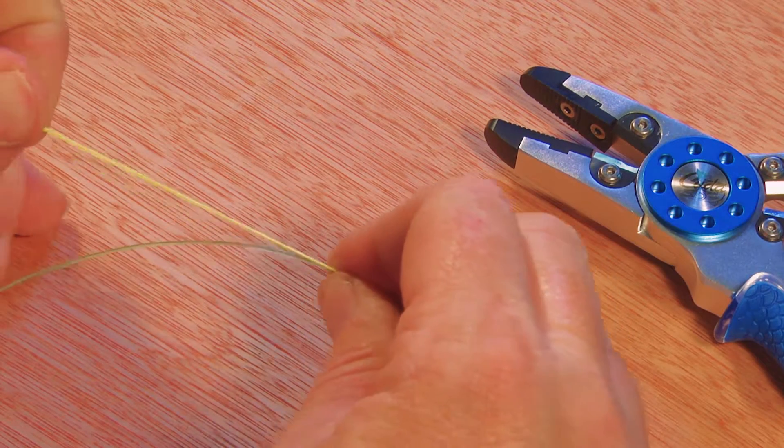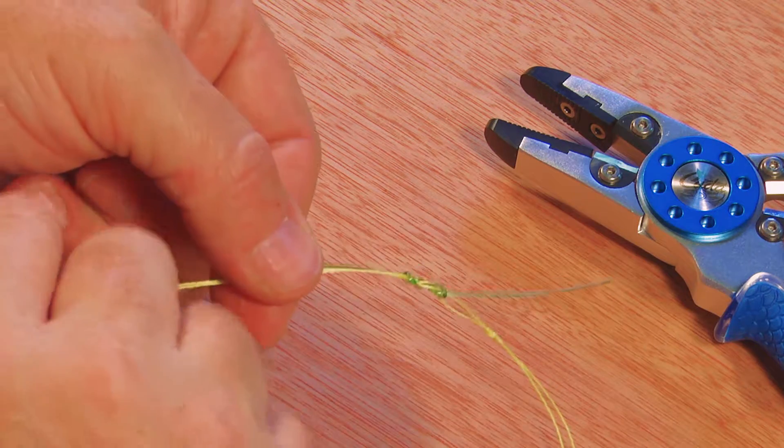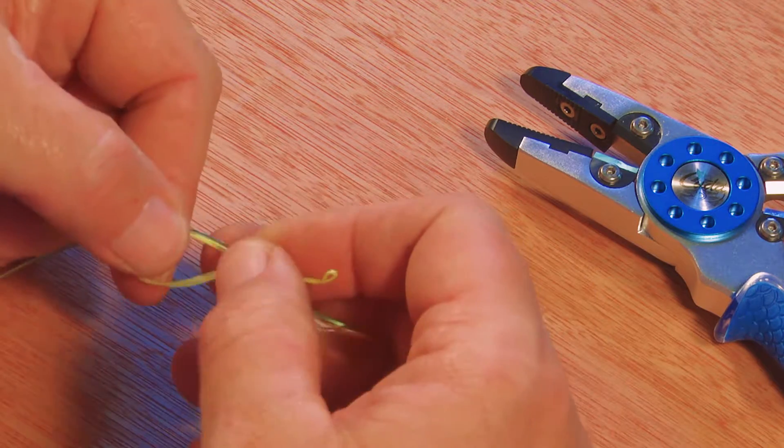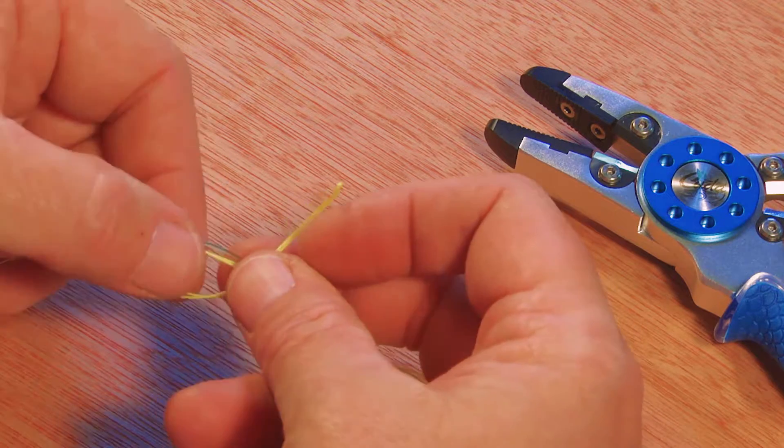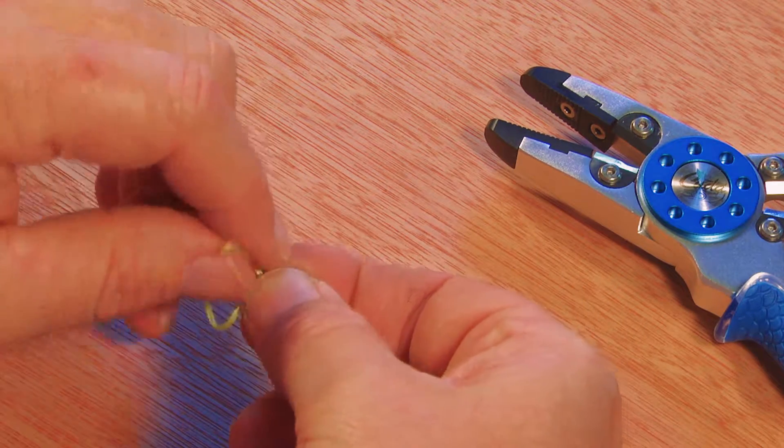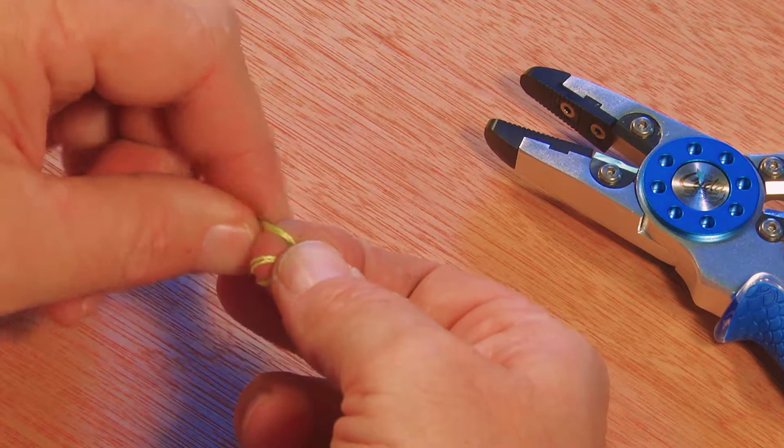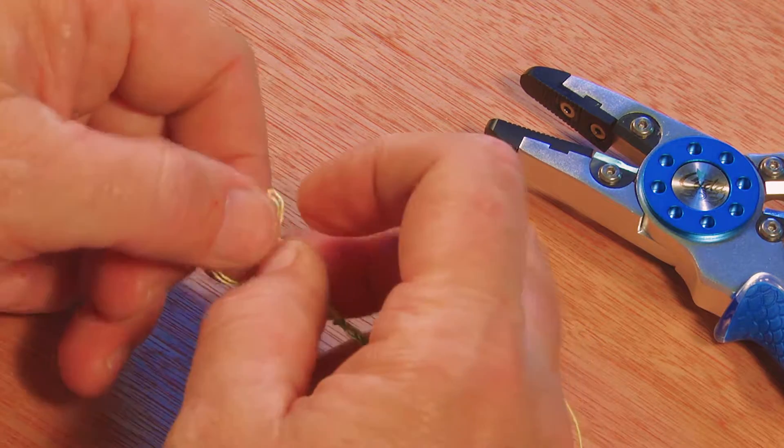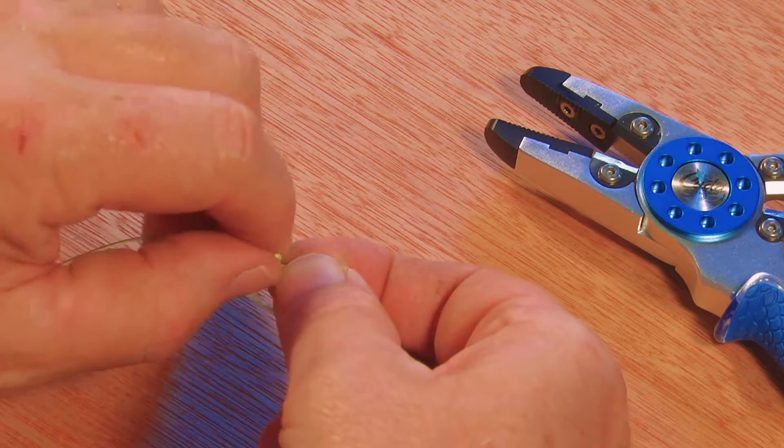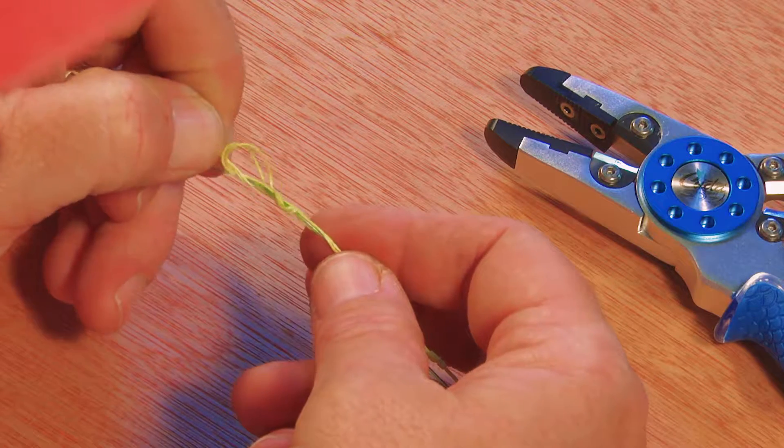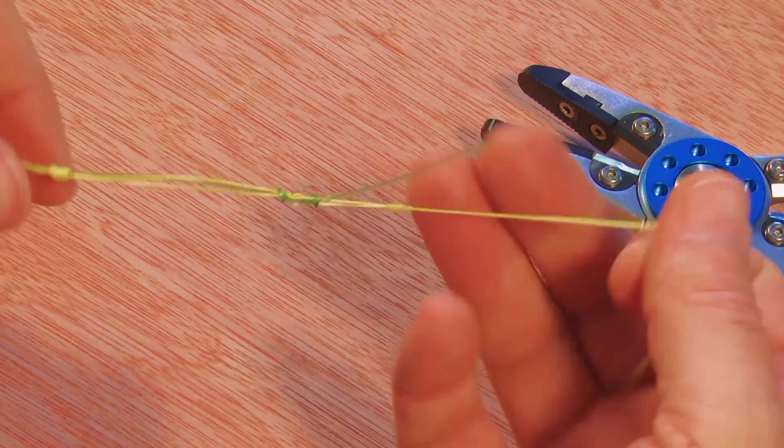Now, same thing here. I'm going to take the braid and I'm going to form my loop like so. And I'm going to go one, two, three passes over both the braid and the mono and pull that tight.